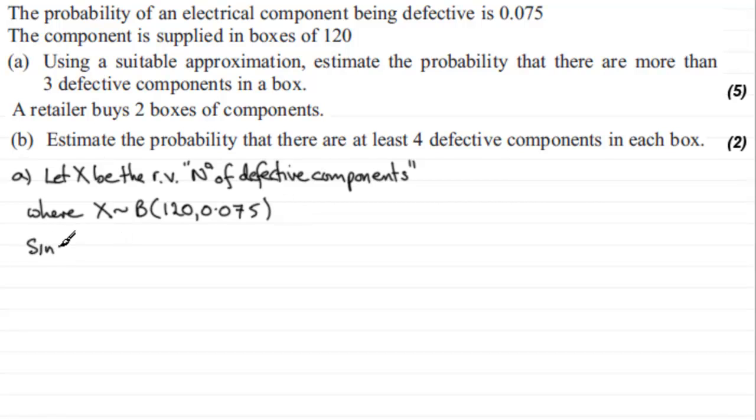So I'm going to write that since n is greater than 50 and p is less than 0.1, then x can be regarded as distributed as a Poisson distribution. And a Poisson distribution has only one parameter, the mean. And the mean is the same as the mean from the binomial distribution, np. In other words, 120 times 0.075, and if you work that out, it comes to 9. So x is distributed as a Poisson distribution with a mean of 9, and we should put approximately afterwards, because in reality it's a binomial, but we're just using the approximate distribution here.